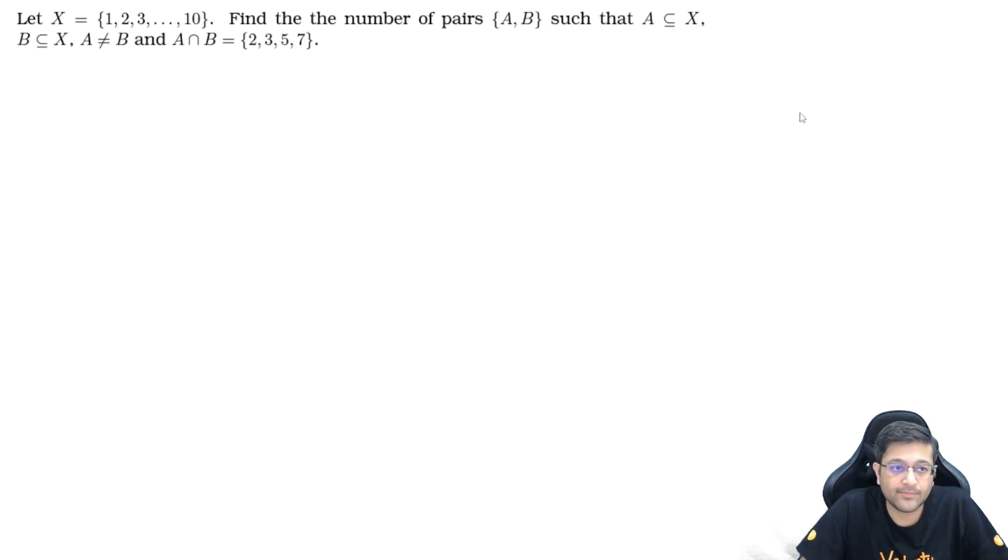Let us try to understand this question. Let X be a set of 10 numbers: 1, 2, 3, 4, up to 10. There are 10 numbers in the set X. We have to find the number of pairs of sets A and B, such that A is a subset of X or can be equal to X as well. The whole A set can be equal to X. This symbol basically means subset or equal to. And B is also subset of or equal to X. And there is a condition that A should not be equal to B. And considering A intersection B is {2, 3, 5, 7}. So A and B will have common elements which are 2, 3, 5 and 7.